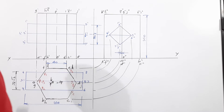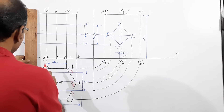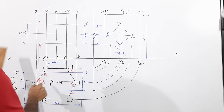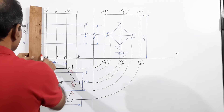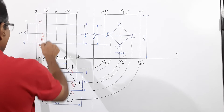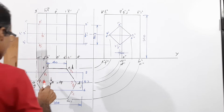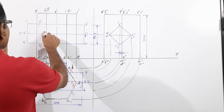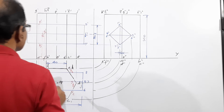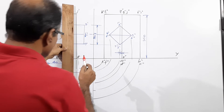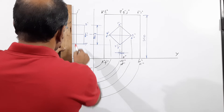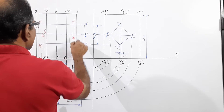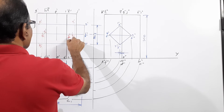Now project these points to the elevation. When you project P1 upward, you get P1-dash; since P1 and P3 coincide, P3-dash is at the same location. Projecting P2 upward — P2 is on edge 2-6, so P2-dash lies on line 2-dash–6-dash. Similarly, projecting P4 upward gives P4-dash. By the same argument, you get Q1-dash, Q3-dash, Q2-dash, and Q4-dash.